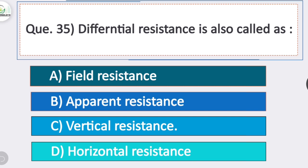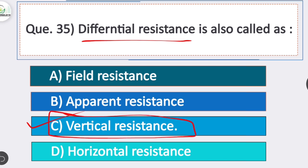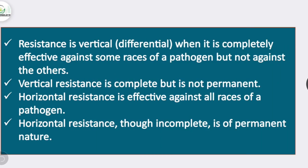Question 35: differential resistance is also called? Option C is correct — vertical resistance. Resistance is vertical when it is completely effective against some races of a pathogen but not others. Vertical resistance is complete but not permanent. Horizontal resistance is effective against all races of a pathogen, is incomplete, and is permanent in nature.